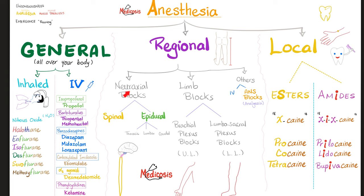Neuraxial — why 'neuro'? Because we're talking about the nervous system. Why 'axial'? Because the spinal cord is in the axis, the center, the middle of your body — in the median plane. We divide the neuraxial blocks into spinal and epidural. Epidural is further subdivided into thoracic, lumbar, and caudal epidural. In caudal, you go through the sacral hiatus. In this video we'll cover spinal and epidural.